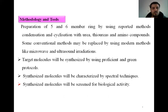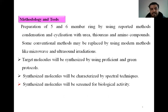Methodology and Tools: Preparation of five and six-membered rings by using reported methods, condensation and cyclization with urea, diurea, and amino compounds. Some conventional methods may be replaced by using modern methods like microwave and ultrasound application. Target molecules will be synthesized using proficient and green protocols. Synthesized molecules will be characterized by spectroscopic techniques and screened for biological activity.